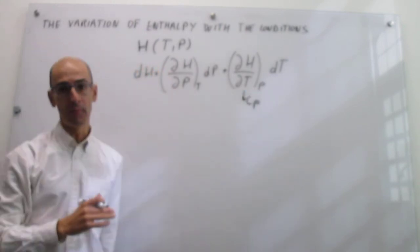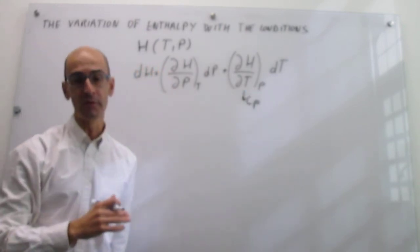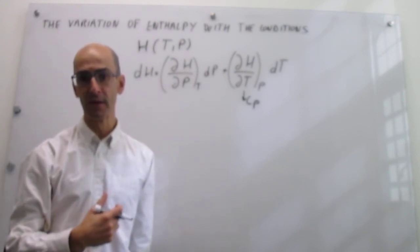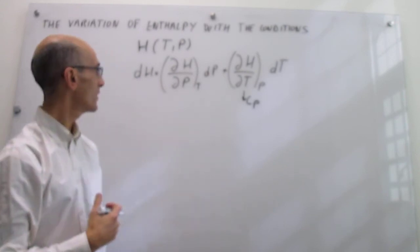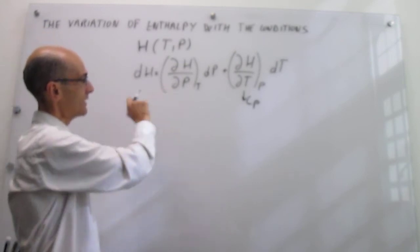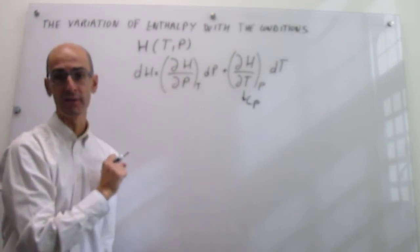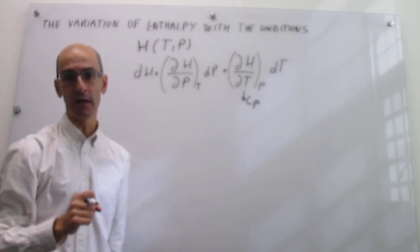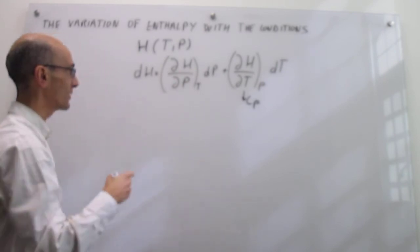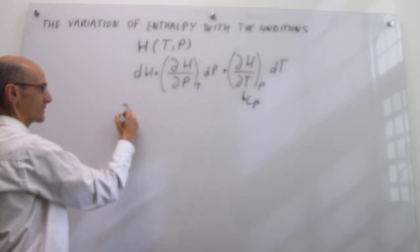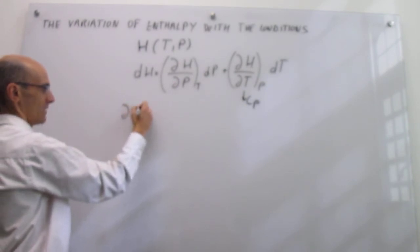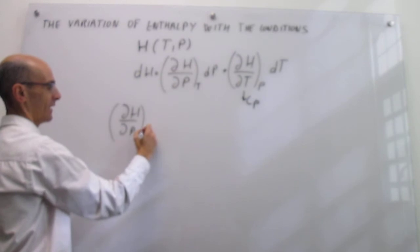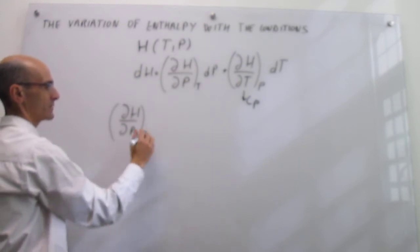The first derivative of enthalpy with respect to pressure at constant temperature is a much more unknown term, which we are going to be developing in the rest of this video. To figure out how the enthalpy depends on pressure at constant temperature, we are going to use the Euler chain rule of first derivatives. Here is the Euler chain rule for enthalpy, pressure, and temperature.